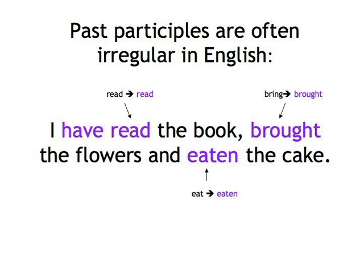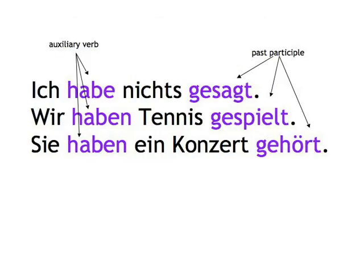So 'I read the book, bring the flowers and eat the cake' becomes 'I have read the book, brought the flowers and eaten the cake.' The perfect tense in German is also formed by the auxiliary haben — or sein if there's a change of place or state — and the past participle of the main verb.